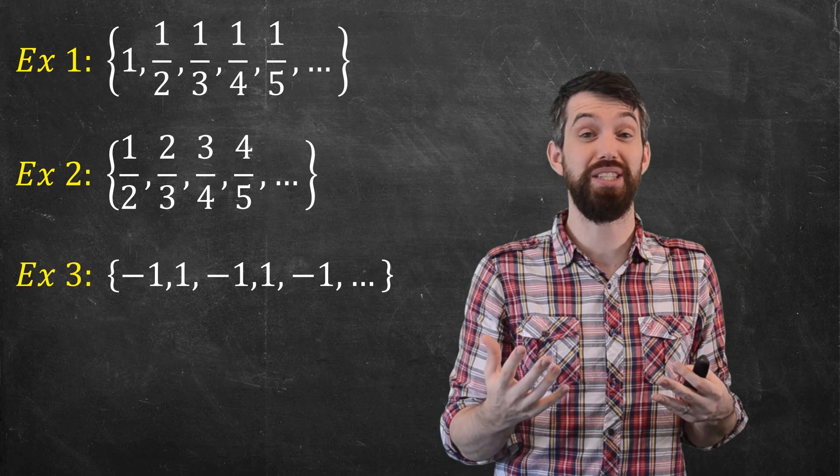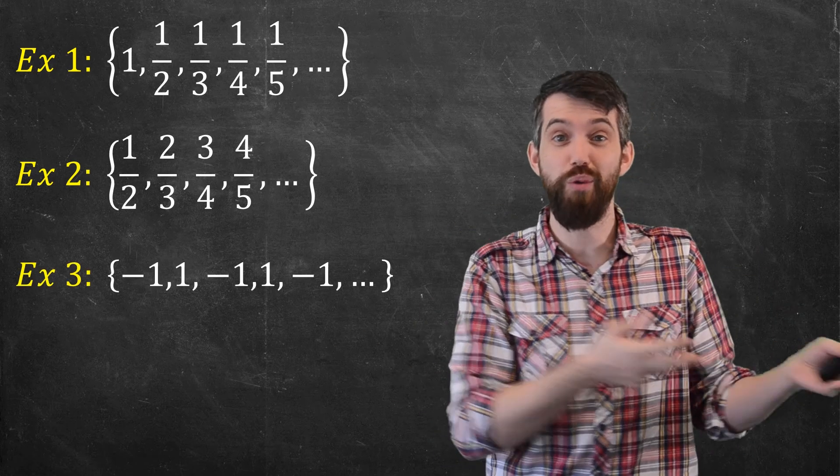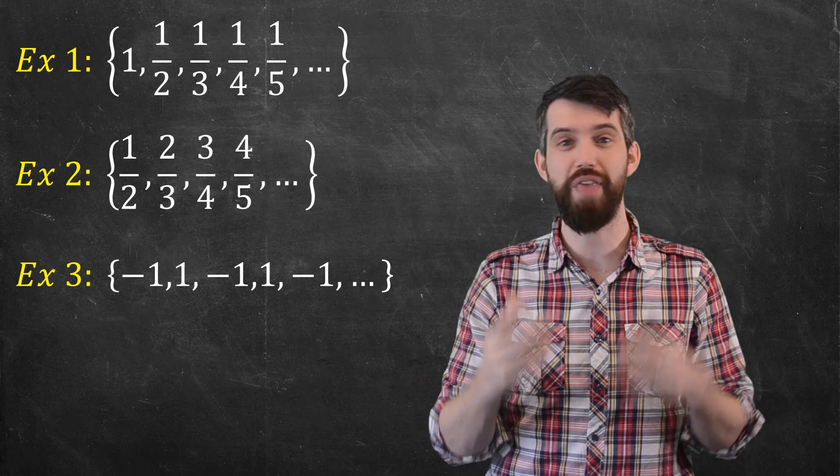There's a third example which is like minus one, one, minus one, one, minus one, one, that goes back and forth that way.